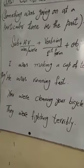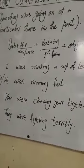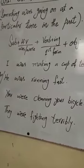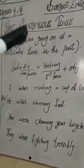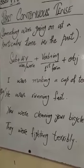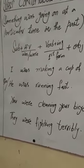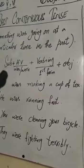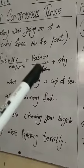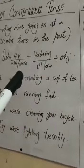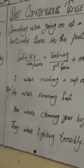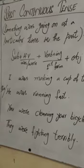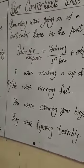وہ بات جو past میں کسی ایک خاص time پر ہو رہی تھی — اس وقت وہ کام continuous یعنی جاری تھا — اسے کہتے ہیں past continuous tense۔ اس کا formula same ہے: subject plus helping verb plus verb کی first form plus ing plus object۔ صرف helping verb چینج ہے: I کے ساتھ was، singular کے ساتھ was، اور plural کے ساتھ were کا use ہوتا ہے۔